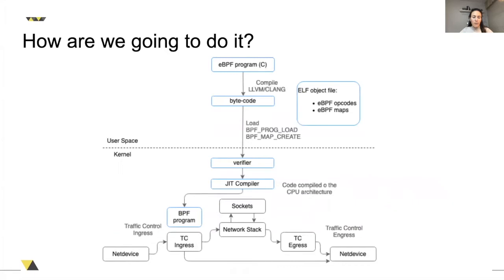Starting with our eBPF program in C, we will compile it with Clang. Then in this case we are going to use tc to load it. The verifier will ensure that it's safe and the program is always going to exit. Then the code will be just-in-time compiled to the underlying CPU architecture. Our program will be running event-driven every time a new packet arrives to the tc control ingress.